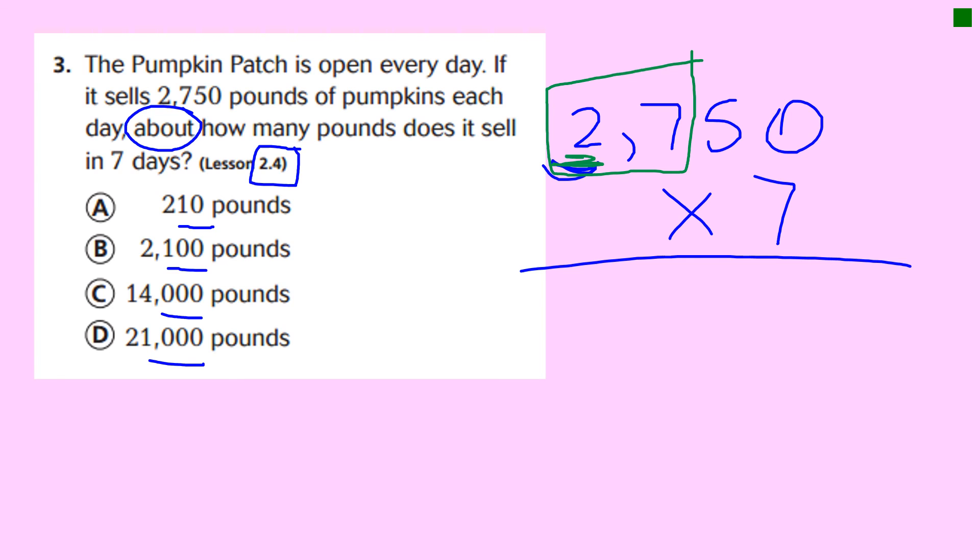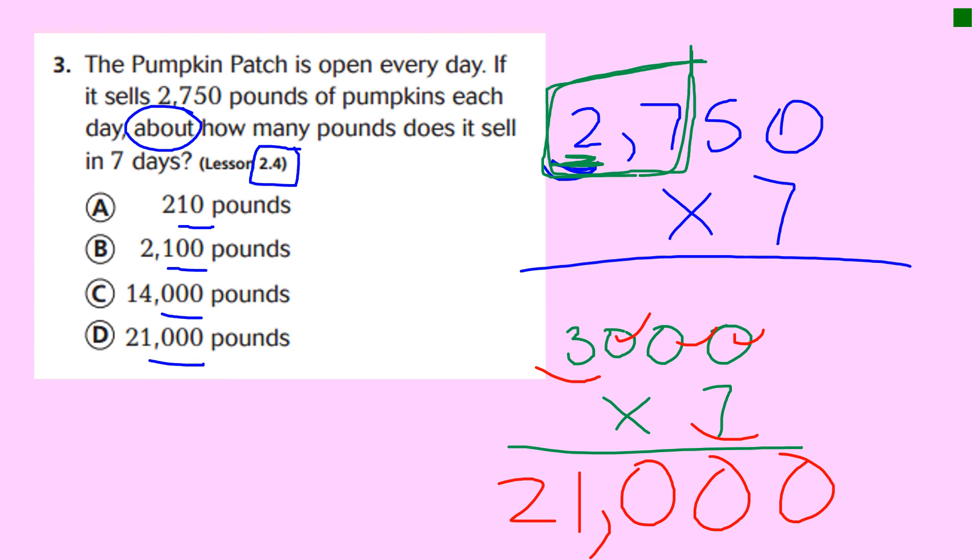So I'm going to do 3,000 times 7. I'm going to do my basic fact: 3 times 7 is 21, then add the zeros. So these people, in seven days, sell 21,000 pounds of pumpkins. That must be the biggest pumpkin patch in the world. All right guys, have a great night. I'll see you soon.